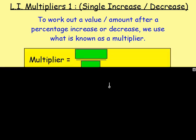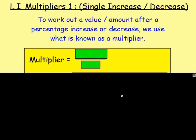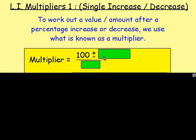A multiplier is a number, and the way you work out the multiplier is you start at 100% — you're always going to start at 100, every single time. And what you do is you then add or subtract your percentage. So if something is increasing by 15%, you would add 15. If something is decreasing by 10%, you take away 10. You add or take away the percentage you're increasing or decreasing by.